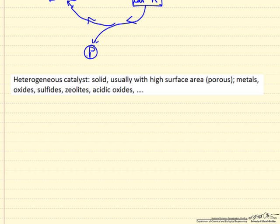Now the large majority of catalysts used on industrial scale are heterogeneous catalysts, which usually means solids with high surface area. These are porous materials, can be metals, oxides, sulfides, zeolites, which is an oxide structure that has porosity as part of its crystalline structure, acidic oxides, and so forth.